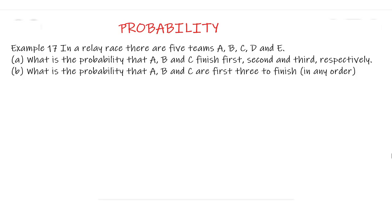In a relay race, there are 5 teams: A, B, C, D and E. Part A: What is the probability that A, B and C finish 1st, 2nd and 3rd respectively? Part B: What is the probability that A, B and C are the first 3 to finish in any order?